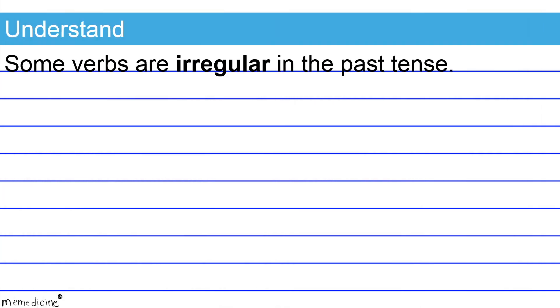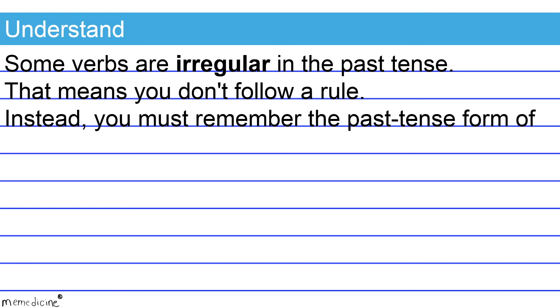Some verbs are irregular in the past tense. That means you don't follow a rule. Instead, you must remember the past tense form of the verb.